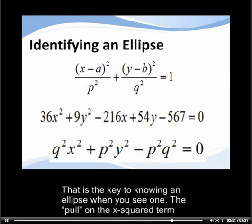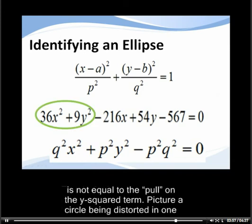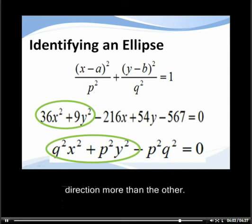That is the key to knowing an ellipse when you see one. The pull on the x squared term is not equal to the pull on the y squared term. Picture a circle being distorted in one direction more than the other.